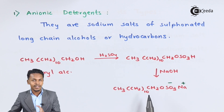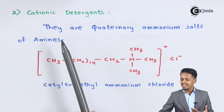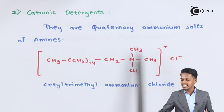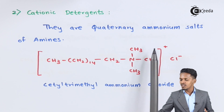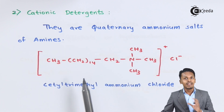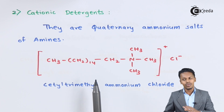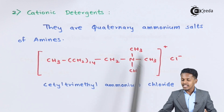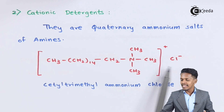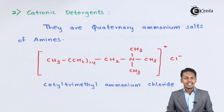Cationic detergents are the quaternary ammonium salts of amines. An example is cetyl trimethyl ammonium chloride, in which the nitrogen acquires a positive charge. The larger hydrocarbon group is not soluble in water, but it helps in removing dirt and impurities from cloth or floors, while the charged part is soluble in water and carries away the dirtiness.